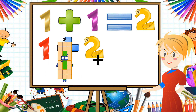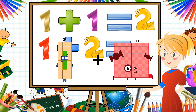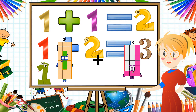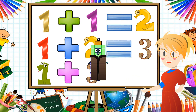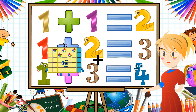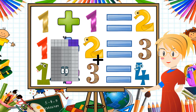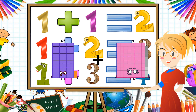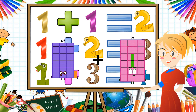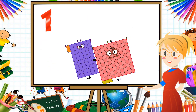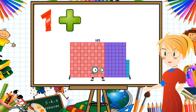24 plus 18 equals 42. 62 plus 103 equals 165.